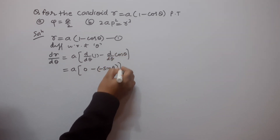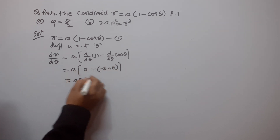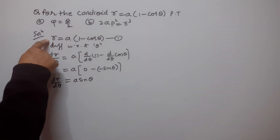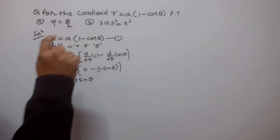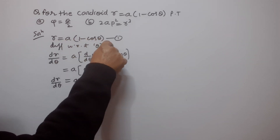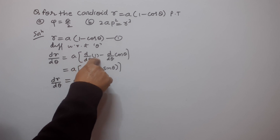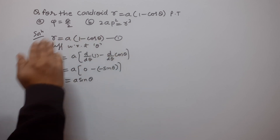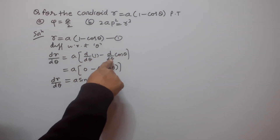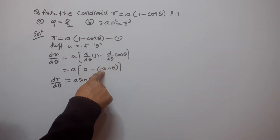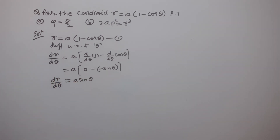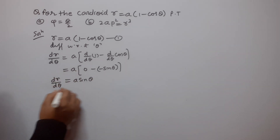Since 1 is constant, differentiation of 1 with respect to θ is 0, and differentiation of cos θ with respect to θ is minus sin θ. So the minus minus gives plus, and dr/dθ equals a·sin θ.